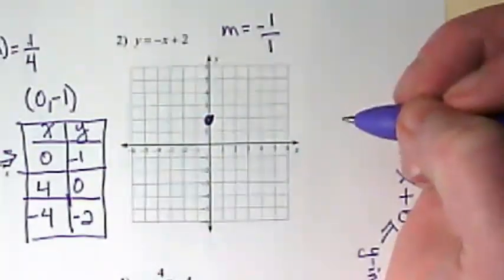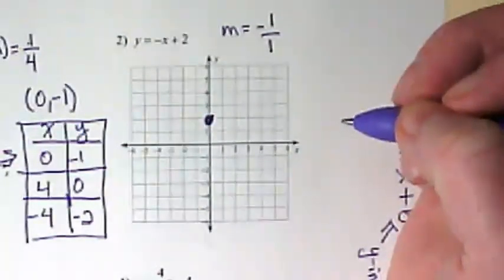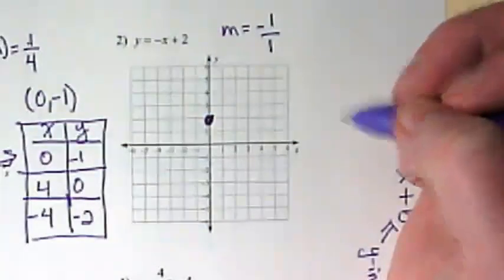That's the only way we can have an invisible something in front of that x, is if it equals 1. So that means that the rise and the run are the same thing.